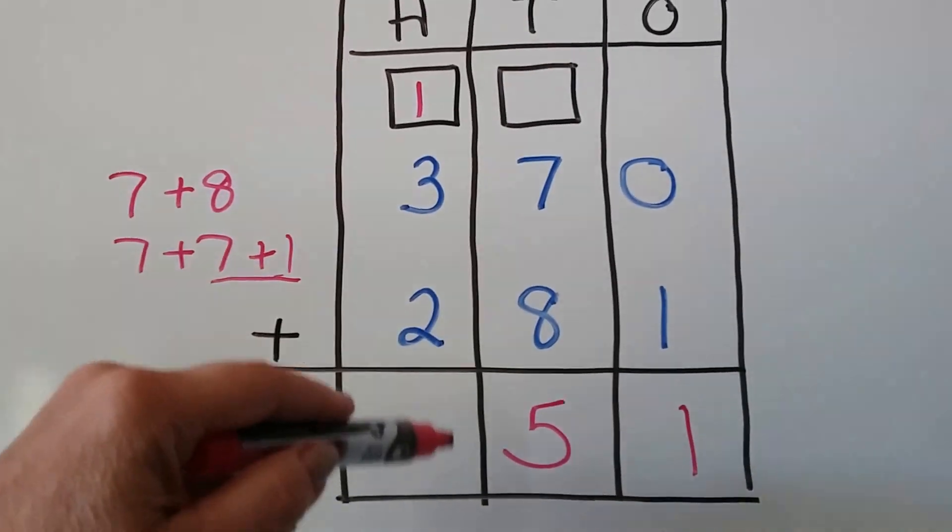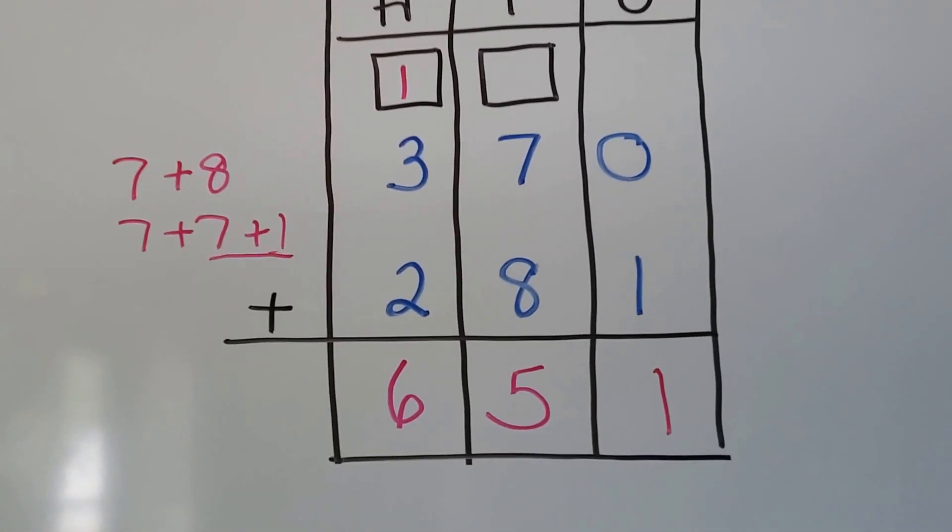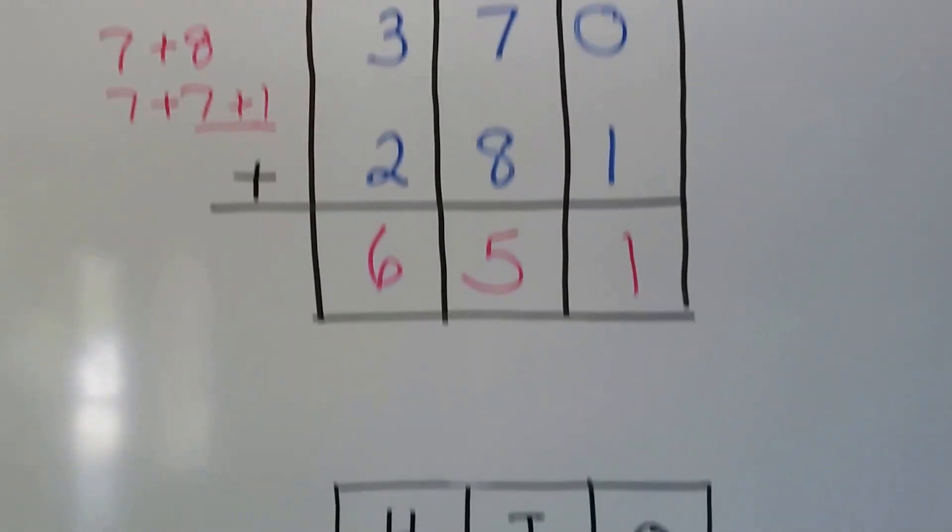Now we add the hundreds place. We have three, four, five, six. We have 651. Let's try another one.